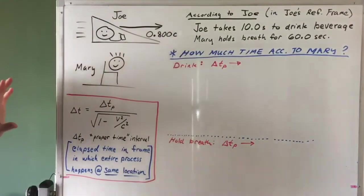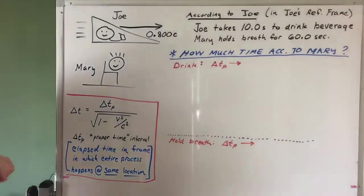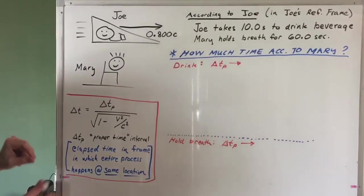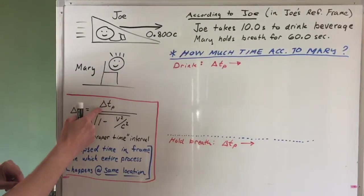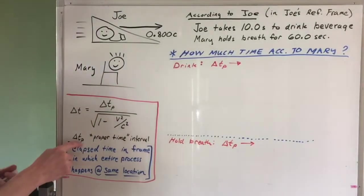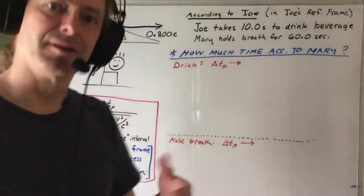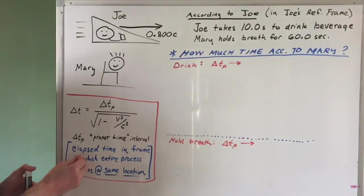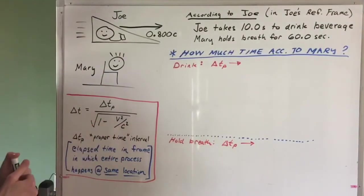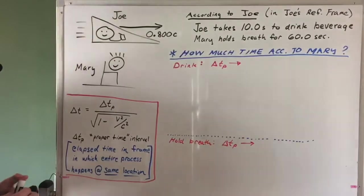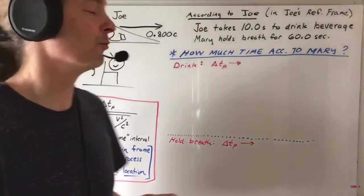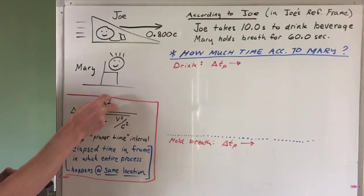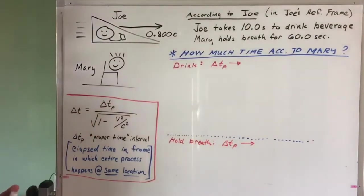The key step in all these time dilation problems is to figure out which observer, if either, observes the so-called proper time interval, delta T sub P. P stands for proper, but proper shouldn't mean better. It just means a special reference frame in which the elapsed time for the whole process happens at the same location. That's going to only be true for one observer, and you need to figure out which one that is — that's the time you identify as delta T sub P.